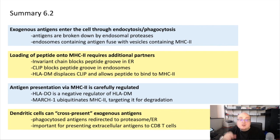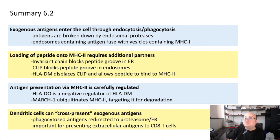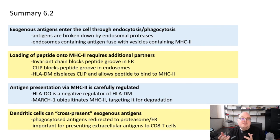Finally, dendritic cells can cross-present exogenous antigens, meaning they can take exogenous antigens and redirect them through the proteasome and ER so that they're ultimately presented on MHC class I instead of MHC class II. This is very important for presenting extracellular antigens specifically to CD8 T cells. In the next lectures, we're going to talk about the genetics of MHC and the human leukocyte antigen, or HLA, locus within our genomes — another area where the diversity of our immune systems and the way our immune system is structured to recognize and fight so many different types of pathogens arises from our genetics.